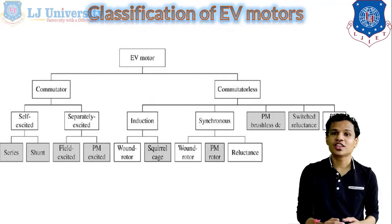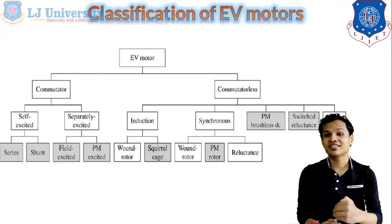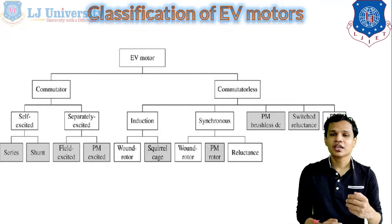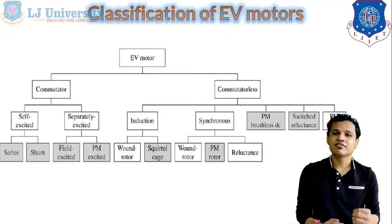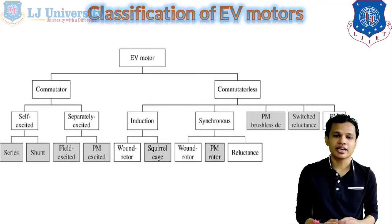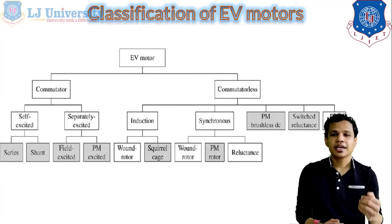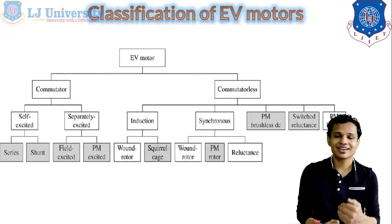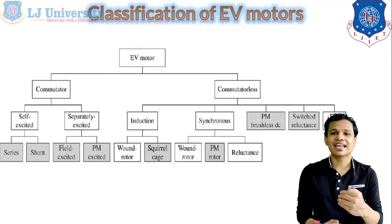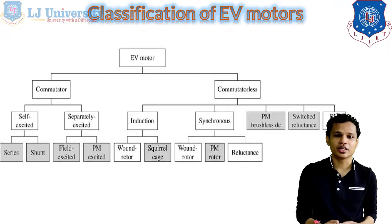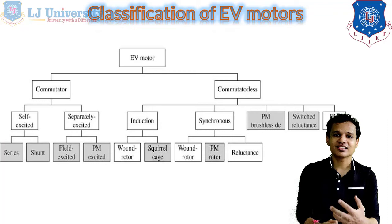Next is the classification of EV motors. There are two main categories: commutator type and commutator-less type. For commutator type DC motors, there are self-excited (series and shunt) and separately excited (field-excited or PM-excited) types. For commutator-less motors, there are induction motors and synchronous motors. Others include PM brushless DC motor, switched reluctance (SR) motor, and PM hybrid motor. These are the basic classified EV motors that can be selected for a vehicle.